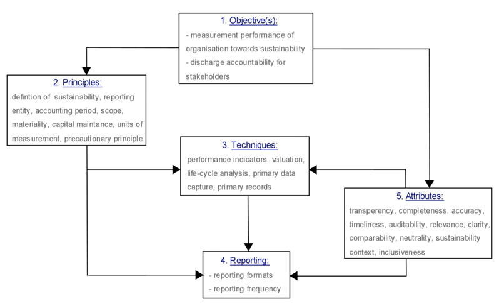Sustainability accounting represents the activities that have a direct impact on society, environment, and economic performance of an organization. Sustainability accounting in managerial accounting contrasts with financial accounting in that managerial accounting is used for internal decision-making and the creation of new policies that will have an effect on the organization's performance at economic, ecological, and social — known as the triple bottom line or triple P's: people, planet, profit — level.